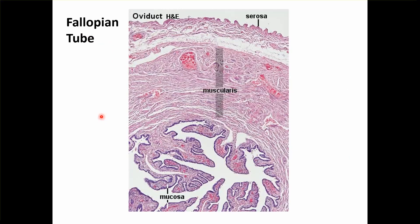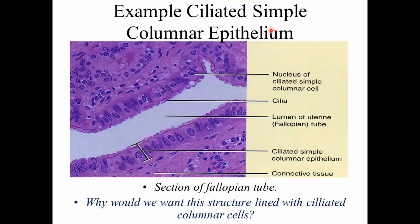Next coming to fallopian tube. The epithelium is simple columnar epithelium with cilia — it is functional because it helps in moving the ovum towards the uterus. There is a muscle layer and it is covered with peritoneum, so it is called serosa. You can see the ciliated simple columnar epithelium with the cilia, and the lumen.